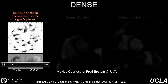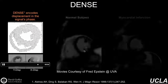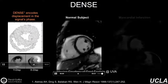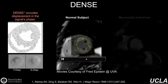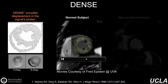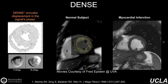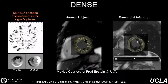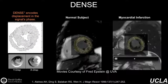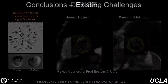There are other approaches, such as CineDense, which encodes displacement in the signal's phase. The advantage is that we can map an actual displacement map on top of the CINE image with just a little bit of image processing. In a patient with myocardial infarction, we can see very clearly a distinct wall motion abnormality in the affected region.